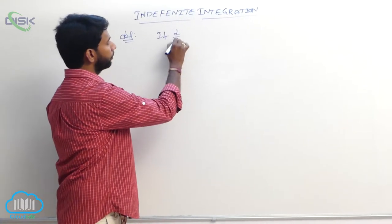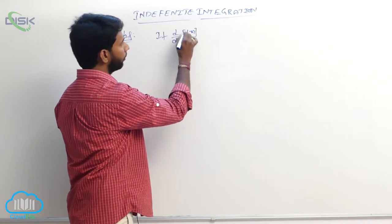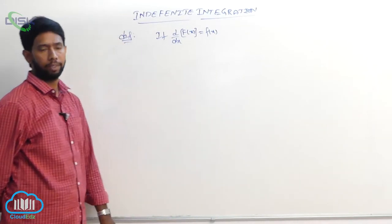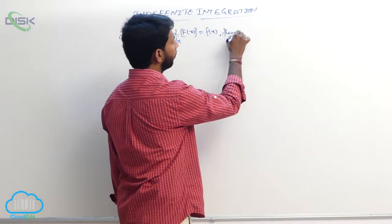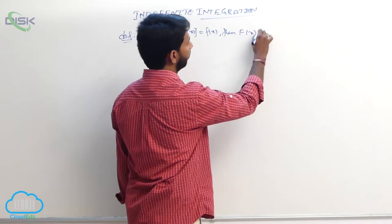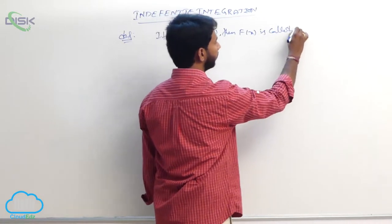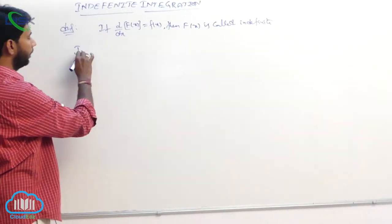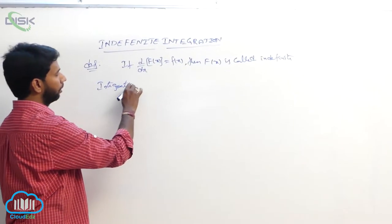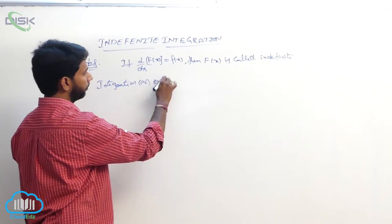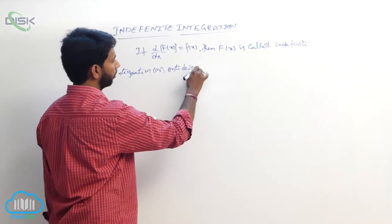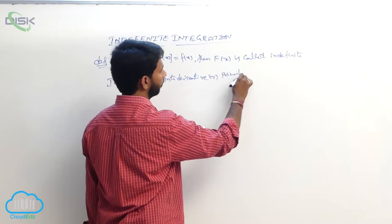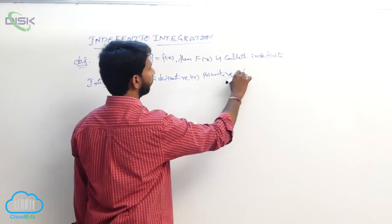If d/dx of capital F of x is equal to small f of x, then capital F of x is called the indefinite integration, or anti-derivative, or primitive of f of x.